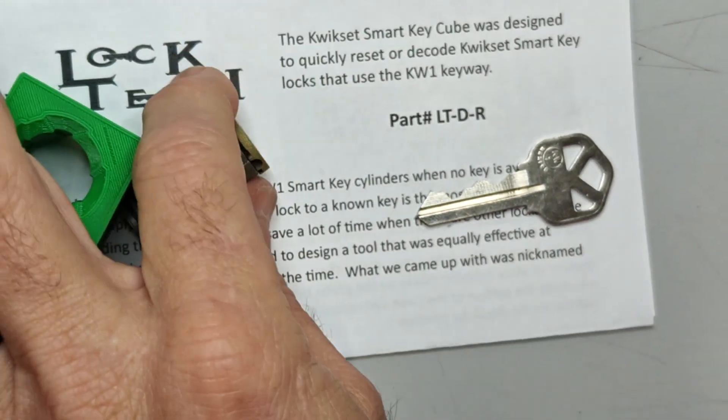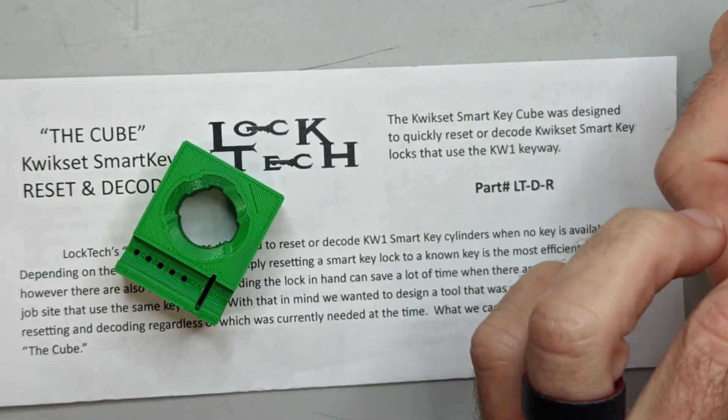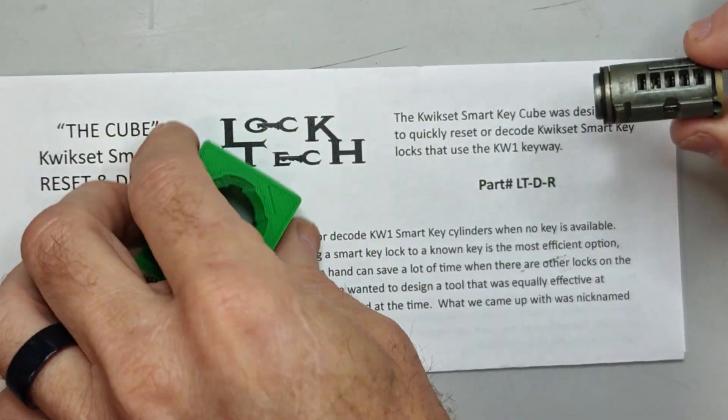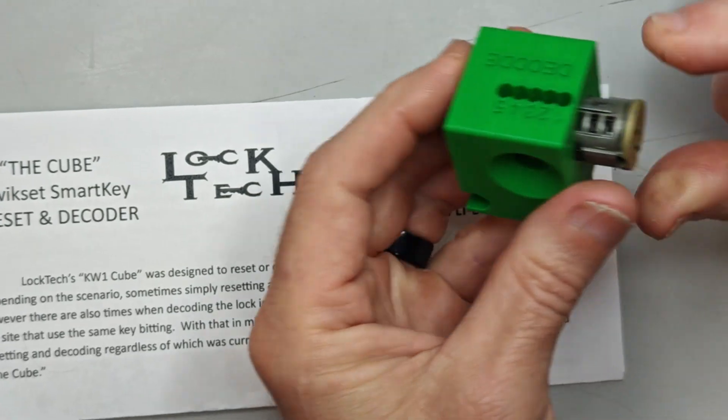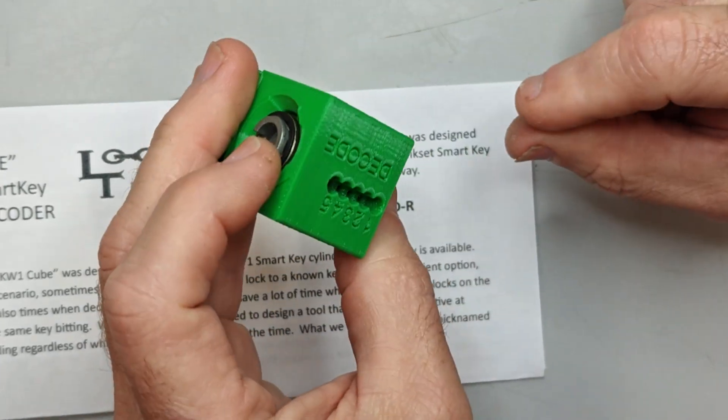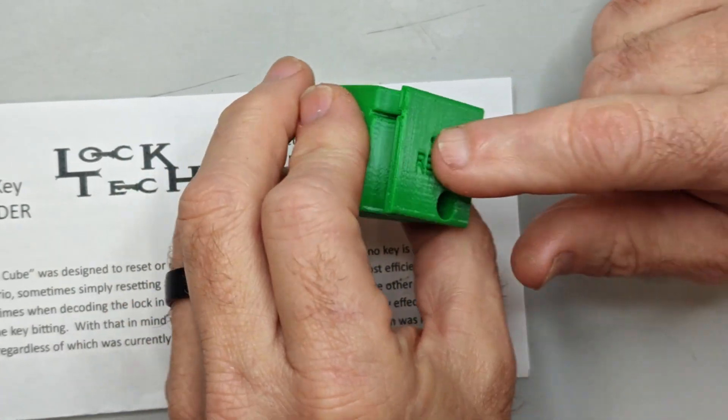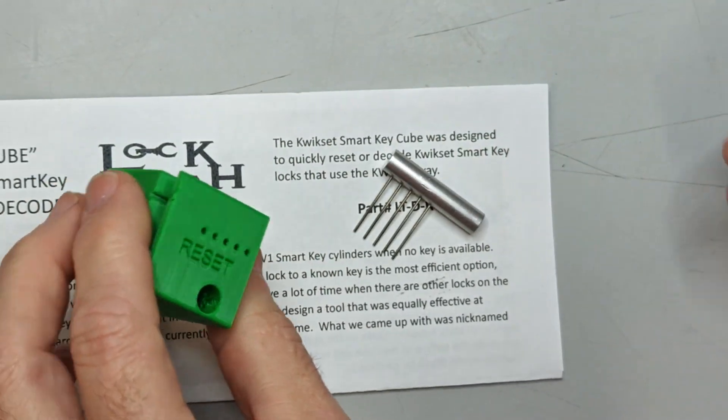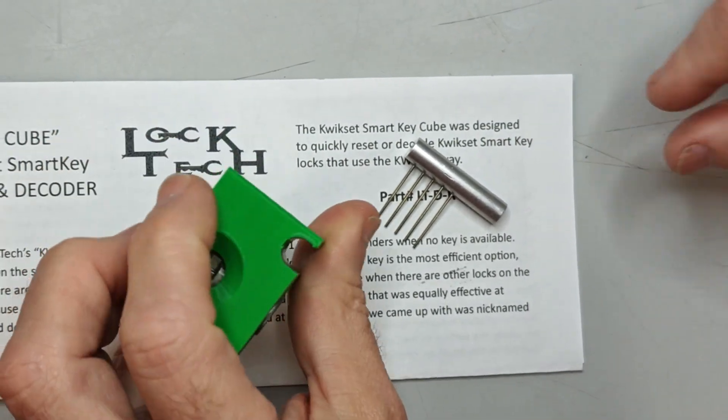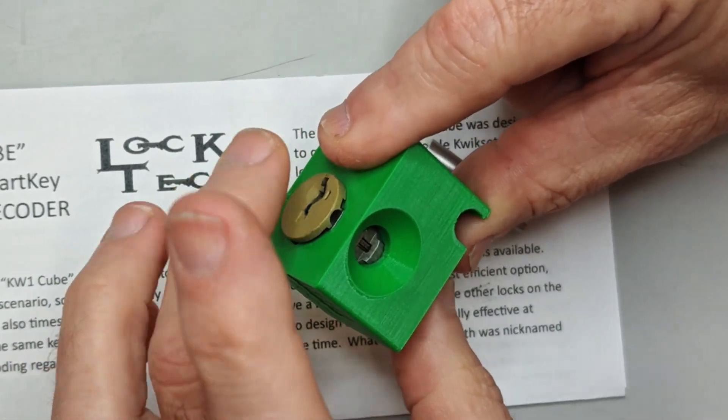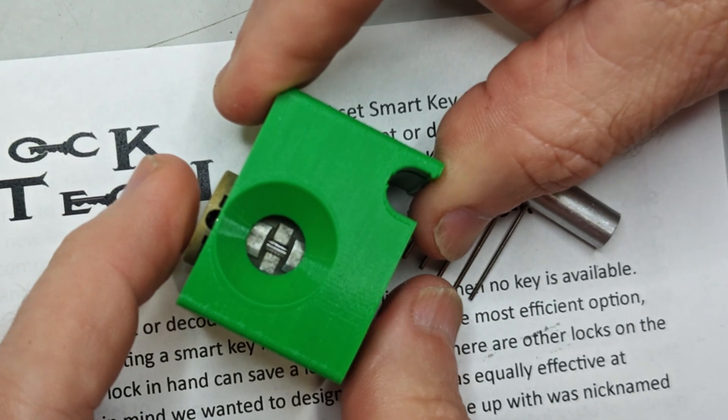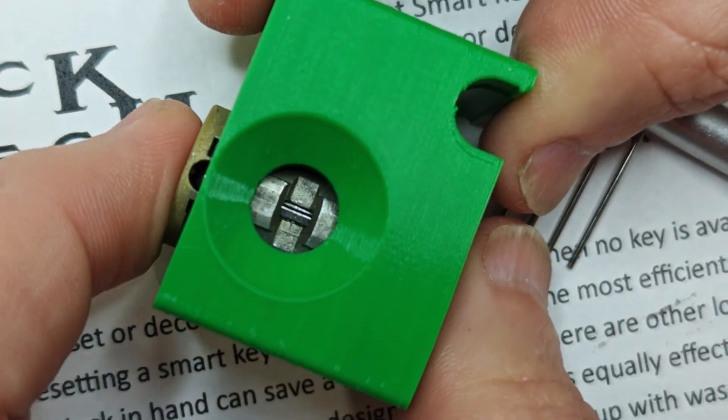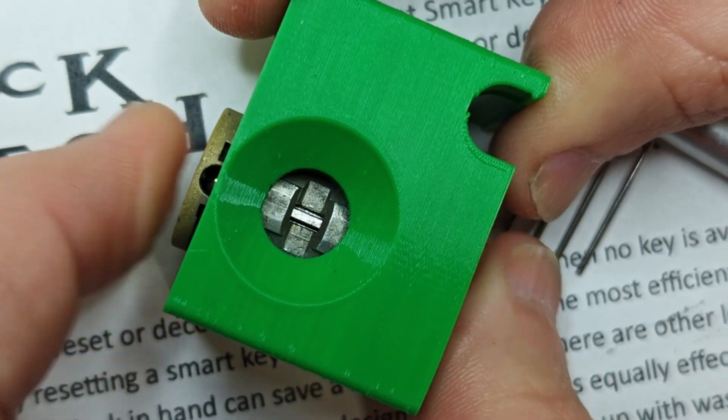Okay, so the next step would be the resetting process. For the resetting process you're going to enter the cylinder into the body the same way, but this time we're going to use the reset side and the reset comb. Now you're going to use the sidebar window again and you want the sidebar to be about in the middle. See how it's got play both directions, you want to put it about in the middle.